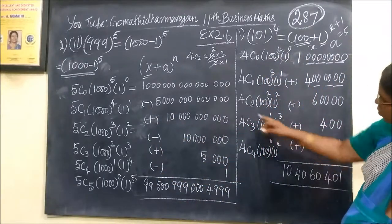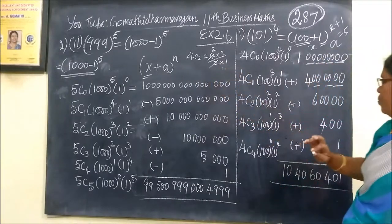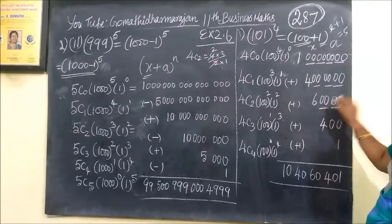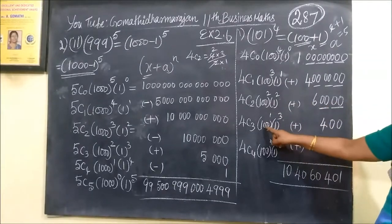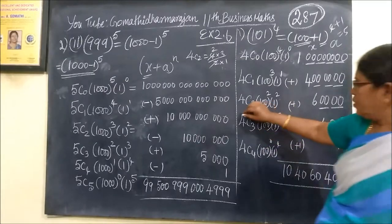Coming to the next one, 4C2. 4C2, this is the calculation. 100 squared. Then, the power of 1 squared.